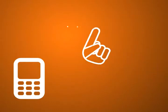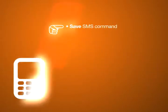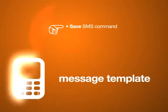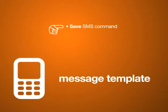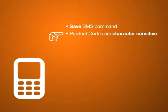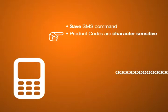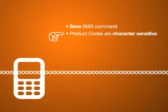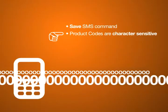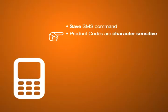Important Loading Tips: Save your SMS command as a message template, so retyping will be much easier. Product codes are character sensitive — letters and numbers must not be interchanged while typing in these codes. For example, the letter O must not be replaced with the number 0 and vice versa.